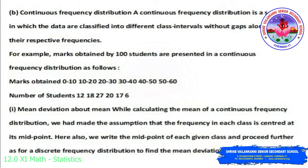For continuous frequency distribution, the data are classified into different class intervals without gaps along with respective frequencies. For example, marks obtained by 100 students in intervals 0–10, 10–20, 20–30, ..., up to 60 with frequencies 12, 18, 27, 20, 17, 6. To find mean deviation about mean for a continuous frequency distribution, we assume the frequency in each class is centered at its midpoint, then proceed as for discrete frequency distribution.